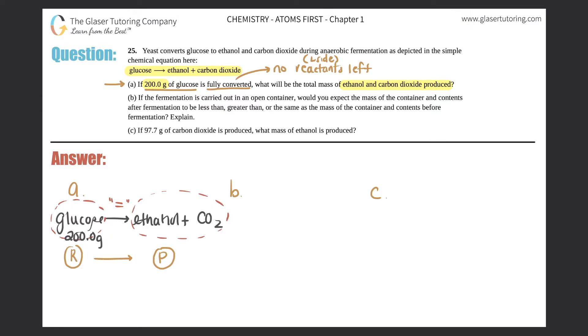Is fully converted, what will be the total mass of ethanol and carbon dioxide produced? Well this side, the left side, the reactant side has to equal the total for this side. So law of conservation of matter says that if it's 200.0 grams for glucose, it has to be a total of 200.0 grams for both ethanol and CO2. So the answer here would be the same exact number because of the law of conservation of matter.